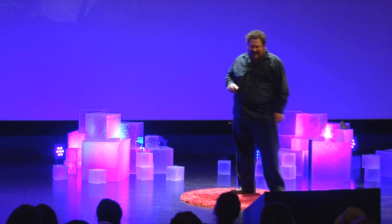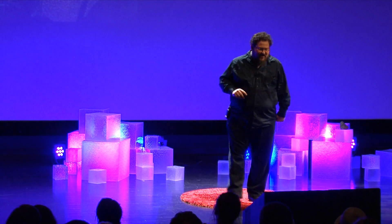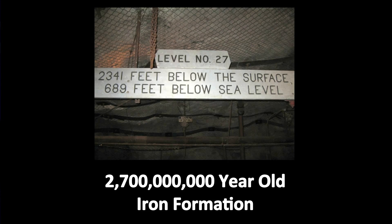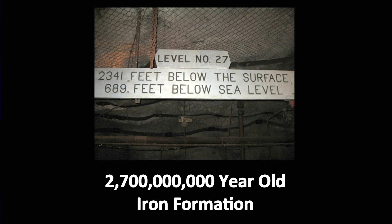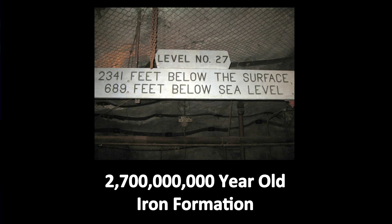Back in the day when this mine was actually operated, 18 or so miners would get crammed into this little tiny space — I can't even imagine how they did that. There's about six of us in this car at the moment. When you get to the bottom of the mine, you're greeted with a very interesting sign. You're at level 27 — almost half a mile underground, surrounded by a 2.7 billion year old iron formation.